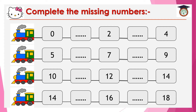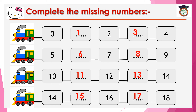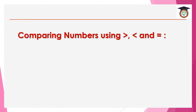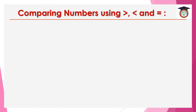Can you complete the missing numbers? 0, 1, 2, 3, excellent, 4, 5, 6, 7, yes, 8, 9, 10, 11, right, 12, 13, 14, 15, yes, 16, 17 — excellent, very good! Now we are going to learn the second lesson: comparing numbers using smaller than, greater than, and equal to.